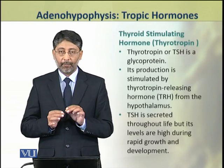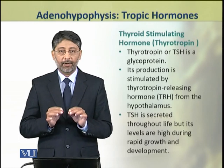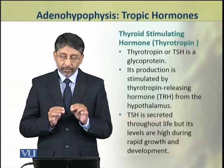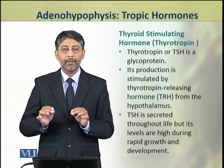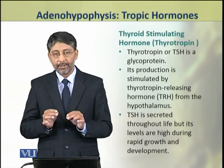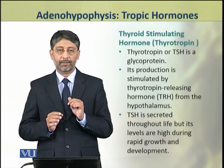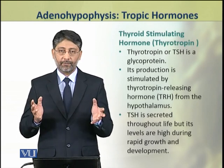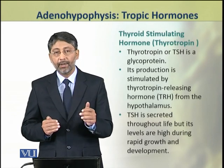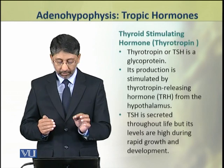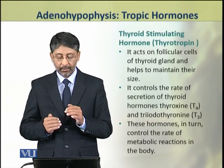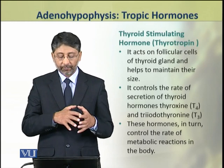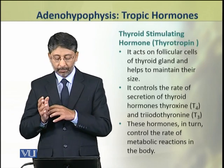Thyrotropin, or TSH — thyroid stimulating hormone — is a glycoprotein. Its production is stimulated by the thyrotropin releasing hormone (TRH) from the hypothalamus. TSH is secreted throughout life, but its levels are particularly high during fast growth and development. This hormone acts on the follicular cells of the thyroid gland and helps to maintain their size.